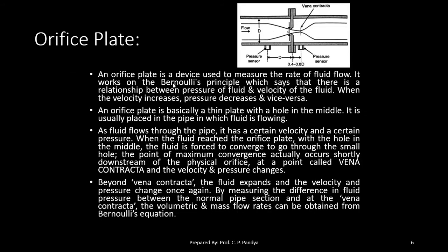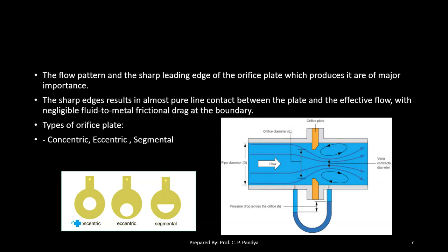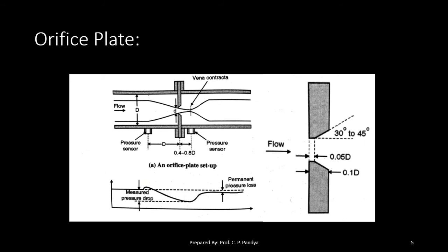The orifice plate comes in different shapes: concentric, eccentric, and segmental. Concentric means the center of the orifice plate coincides with the center of the pipe. Eccentric means the center of the orifice hole is displaced from the center of the pipe. Segmental means a half portion of the pipe is covered by the orifice plate. The orifice plate measures fluid flow and operates on the principle of Bernoulli's theorem.